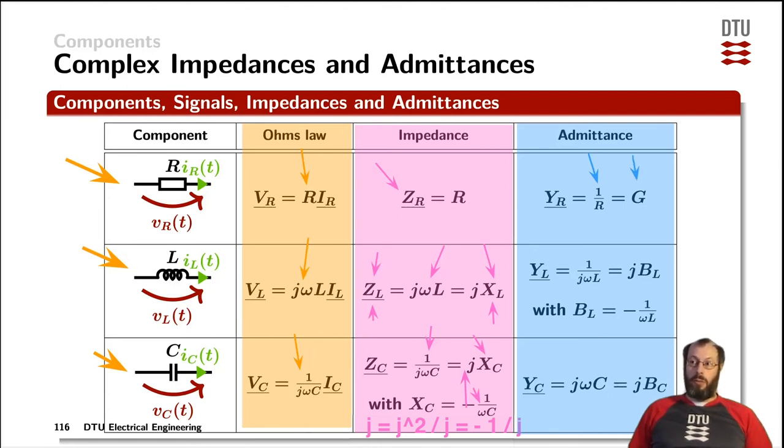For an inductor, the admittance is 1 over j omega L, which is equal to j times the susceptance of the admittance, which is the imaginary part of the admittance. And applying the same math as we just did with the factor of j, we can rewrite BL to be equivalent to minus 1 over omega L and leave the j in front of BL.